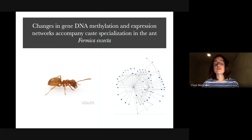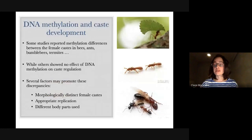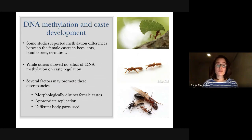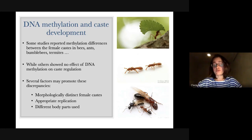I then wanted to look a little bit deeper into these co-expression networks. I wanted to see if we would find the same thing on a single tissue, since we had done it with the whole body. We also wanted to look at DNA methylation, because DNA methylation has been shown to occur in insects and has been proposed as a crucial mechanism to control the developmental path taken by the two castes.